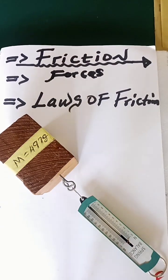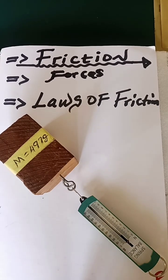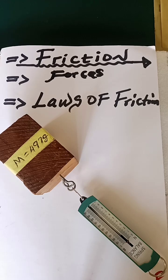Law number one: friction opposes the relative motion between two surfaces in contact. It acts in a direction opposite to that of the motion.